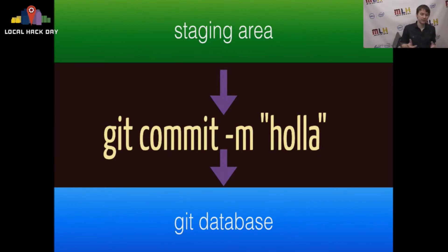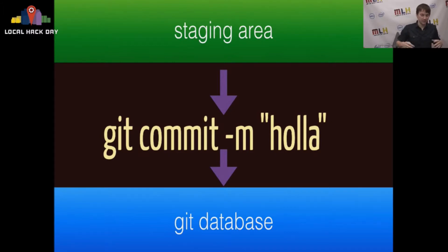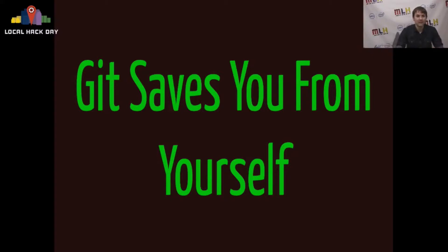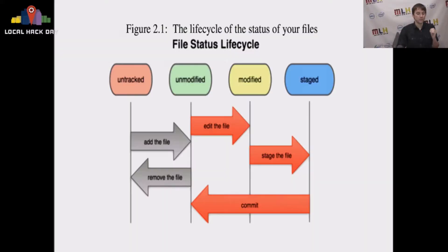So then we've added these changes to the index, to the staging area, and now we want to actually commit these into the Git database with git commit -m and then our message. Your commit message should follow your project's standard format. Git saves you from yourself — humans are stupid, we make tons of mistakes all the time. Git stops you from making those mistakes, so long as you commit early and commit often, you will be able to move back to any state of the code that you possibly had.